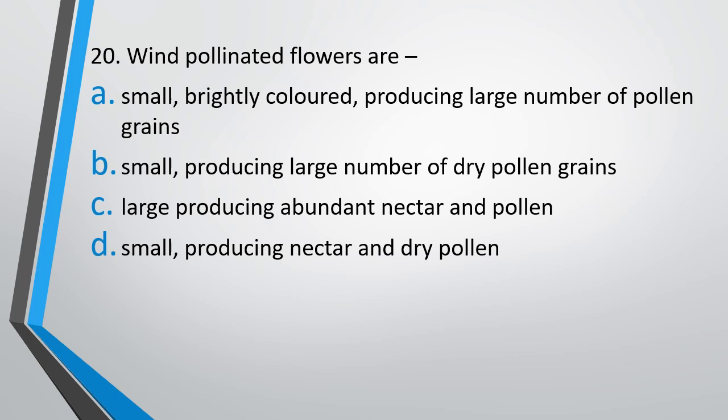Question number 20. Wind pollinated flowers are: Small, brightly colored, producing large number of pollen grains. Small, producing large number of dry pollens. Large, producing abundant nectar and pollen. Small, producing nectar and dry pollen. The correct answer is option B. Small, producing large number of dry pollen grains.